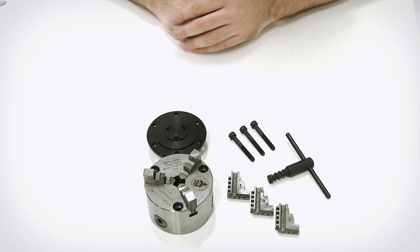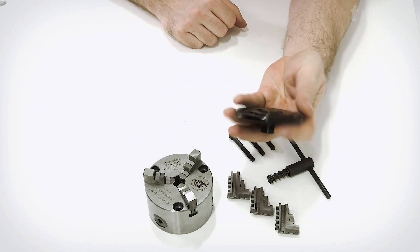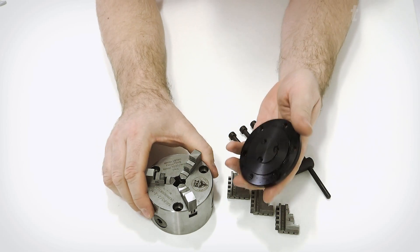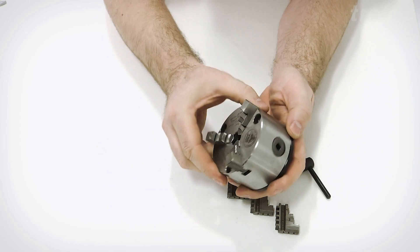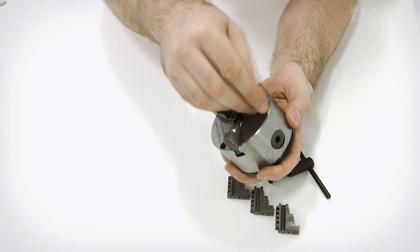When you order these, they will arrive disassembled like this. To assemble, mount the main chuck onto the adapter plate and attach it with the three screws.